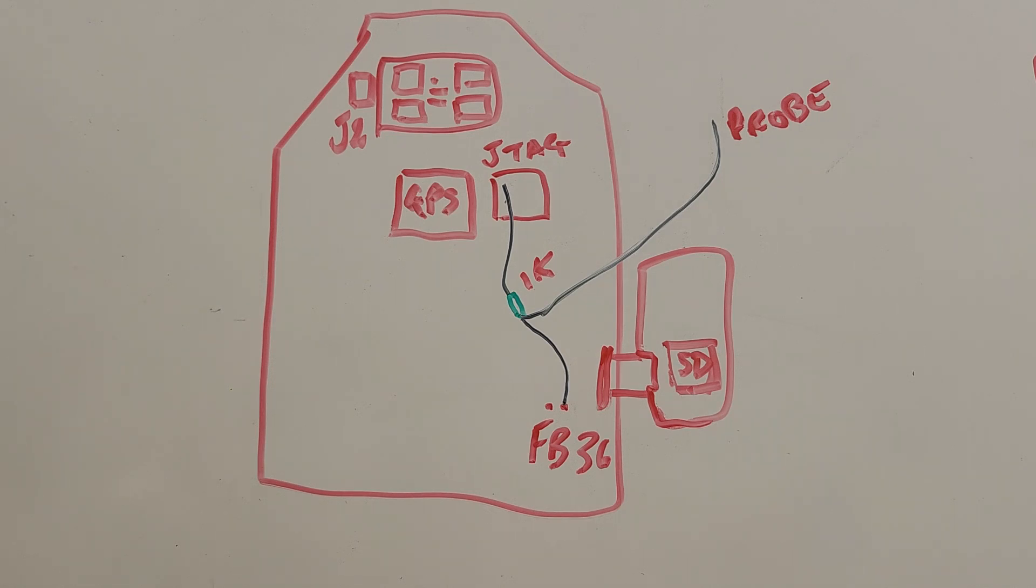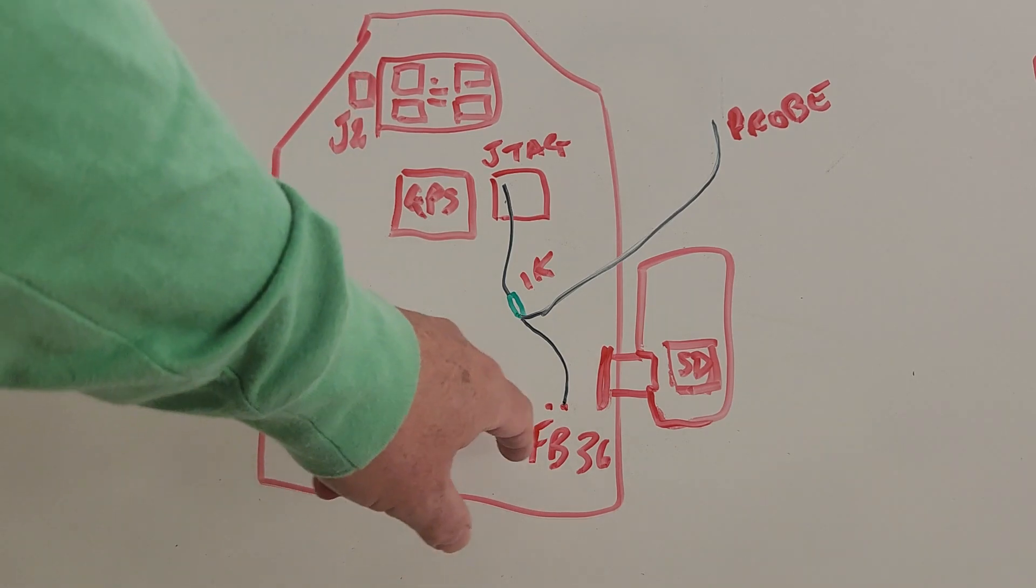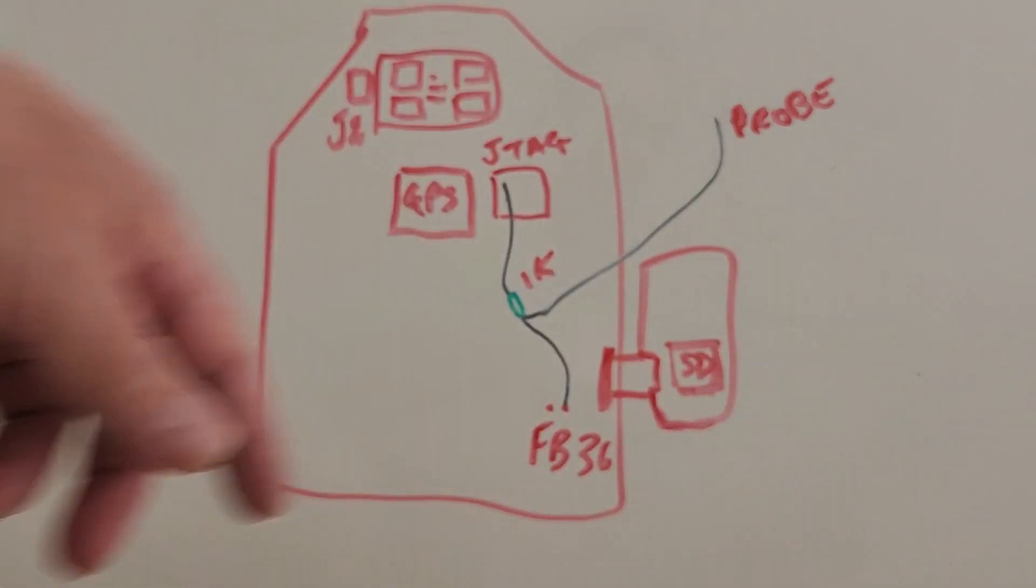There is actually a fairly simple solution to this. So, as you can see, this is my board, GPS unit, there's the CAN, J2, UART connector, the FB36, and I've just thrown in the SD board as well.